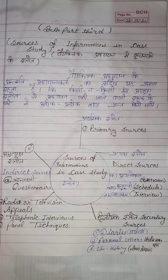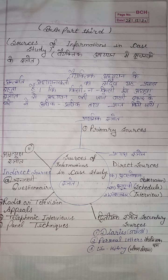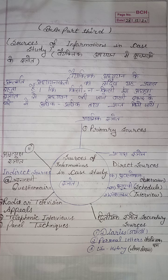The process of observation as a direct source of material collection is divided into three parts, and any method can be used according to the nature of the subject being studied. Number one: Participant Observation. Number two: Quasi-Participant Observation. Number three: Non-Participant Observation.